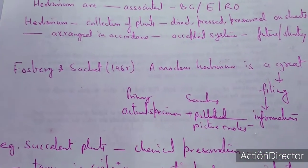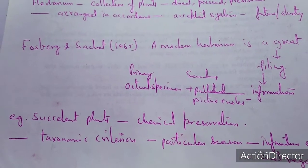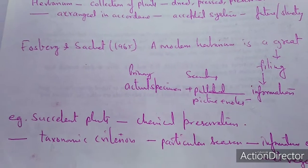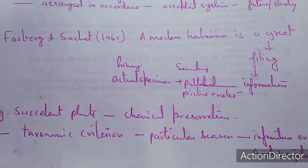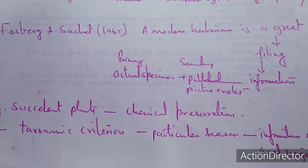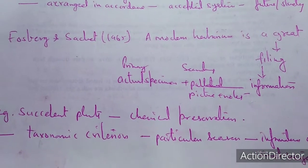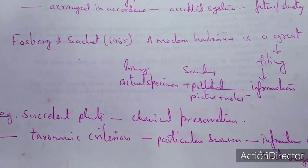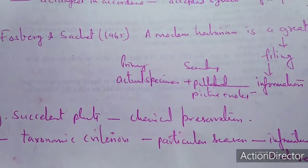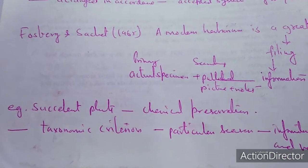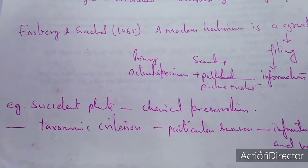Fosberg and Sachet in 1965 defined the modern herbarium. They suggested that the modern herbarium is a great filing system which includes two types of formulation: primary and secondary. Primary means the actual specimen; secondary is in the form of published literature, pictures, as well as notes. For example, succulent plants cannot be preserved through the herbarium sheet.